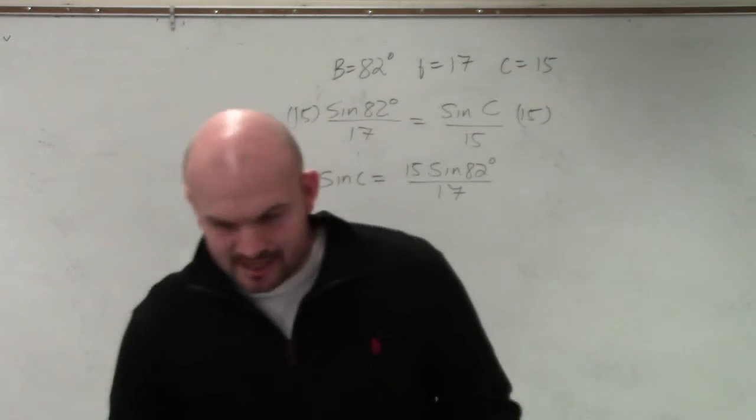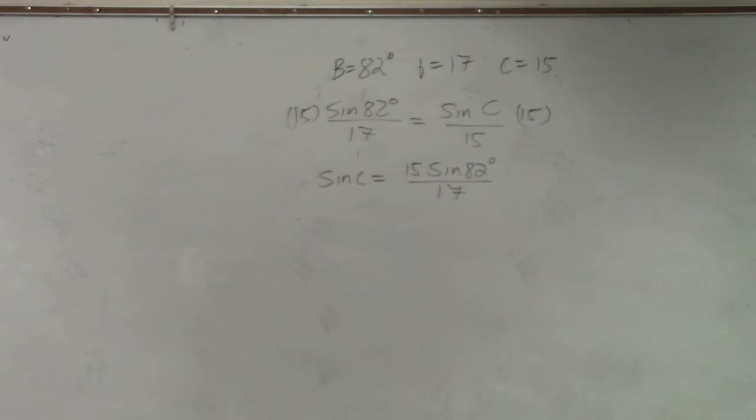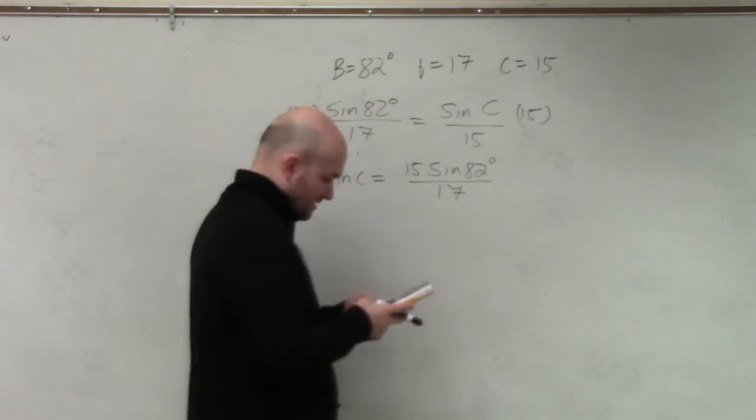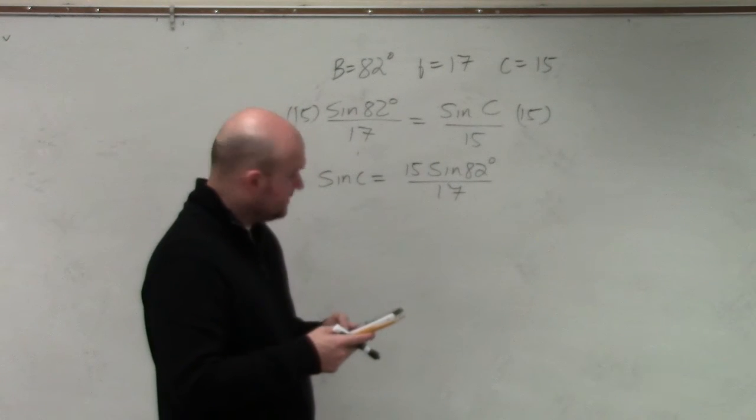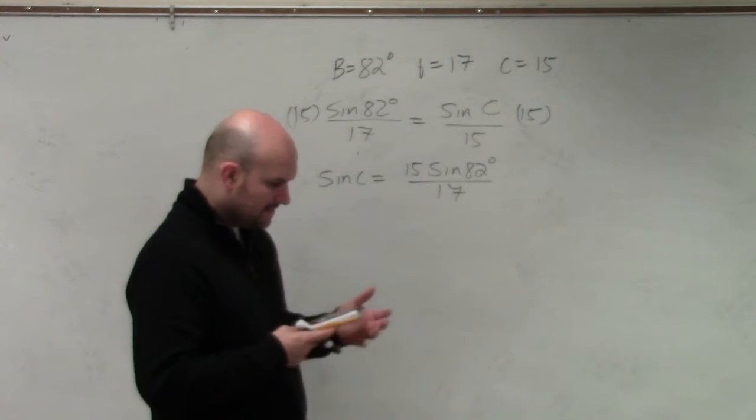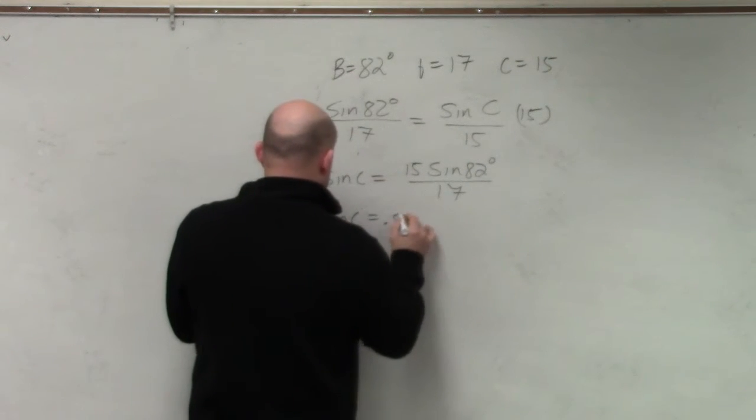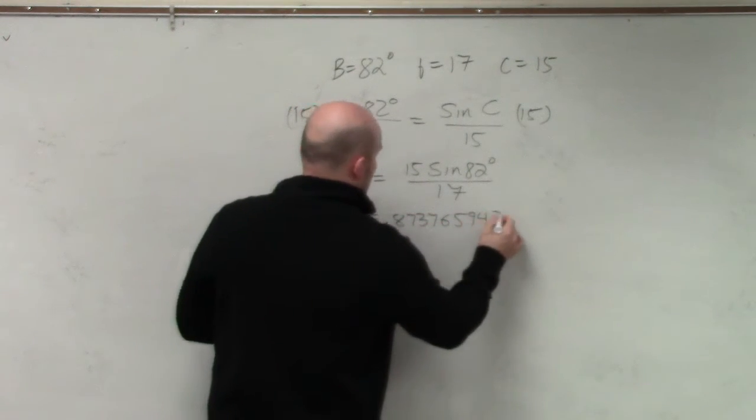So now we go ahead and get in our calculator, and we simply just type that in. We say 15 times the sine of 82, close my parentheses, divide by 17. And again, I get sine of C is equal to 0.873765943.